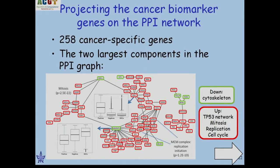Here is one example of projecting biomarkers onto the protein interaction network, for the disease ontology term 'cancer.' There are two connected components: one centered around P53, as expected, and another that is upregulated in mitosis, cell replication, and cell cycle. These components are connected by two green nodes annotated as cytoskeleton, which brings up the hypothesis that impaired rewiring of the replication pathway has a role in cancer — and there is some experimental evidence for this.